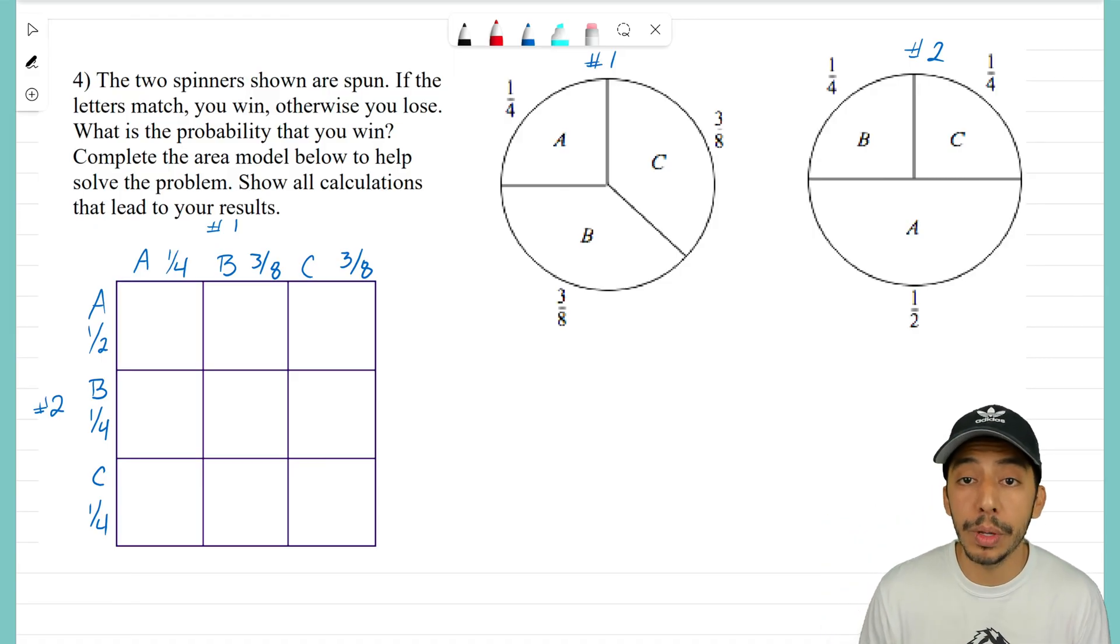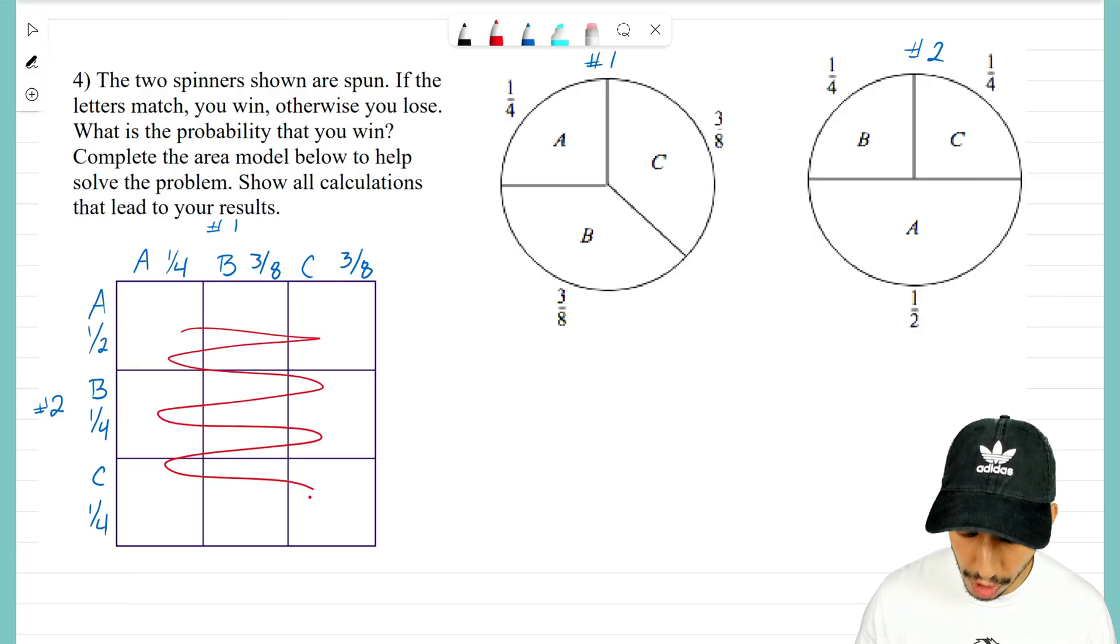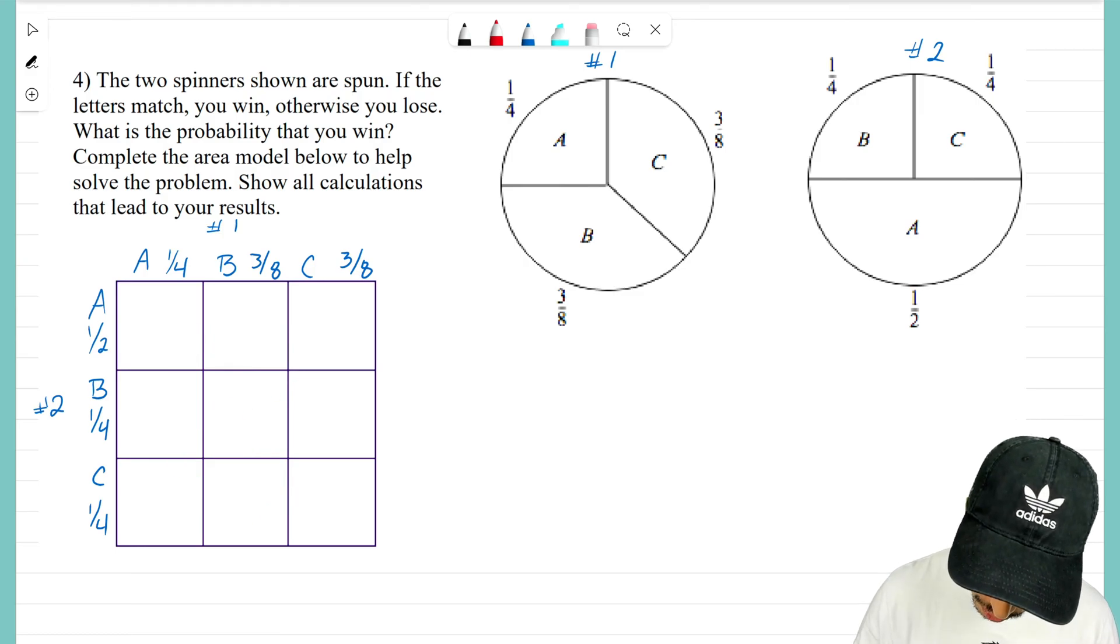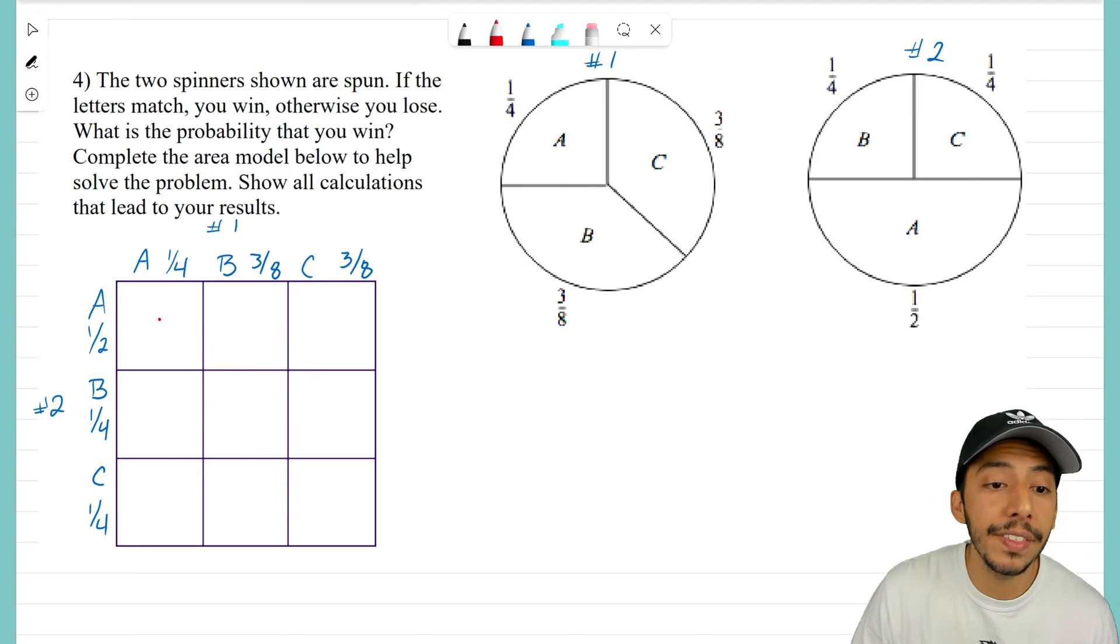If we can fill in the inside there, it's going to help us solve this problem. So let's go ahead and do that. To fill in this spot here, all we do is we look at the sides that make up this box and we multiply them. So I'm going to take one-fourth times one-half and that's going to give me one over eight. We do that all the way through this area model. For this one, it's three-eighths times one-half, and three-eighths times one-half gives us three over sixteen.